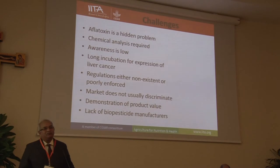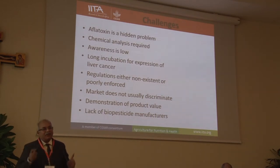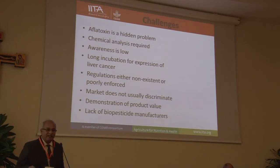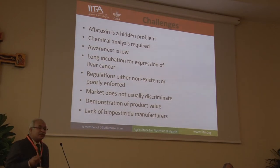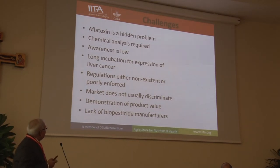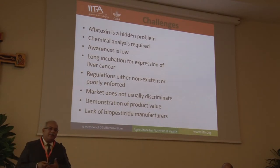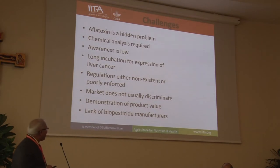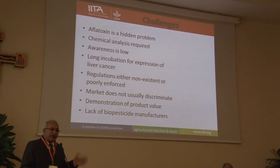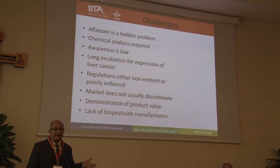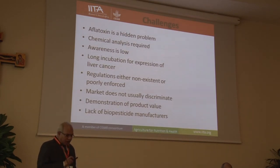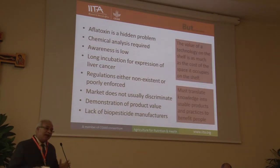You have a technology and it works. But the more difficult part is taking it out — there are several challenges. First, aflatoxin is a hidden problem; you can't see it and require chemical analysis. Awareness is low, and there is a large time lag between exposure and cancer. Regulations in most countries are either non-existent or poorly enforced. As a result, the market doesn't discriminate between toxin-contaminated and uncontaminated grains. There's been no work on demonstrating product value or marketing, and there's a lack of manufacturers — it's an input that somebody has to produce.